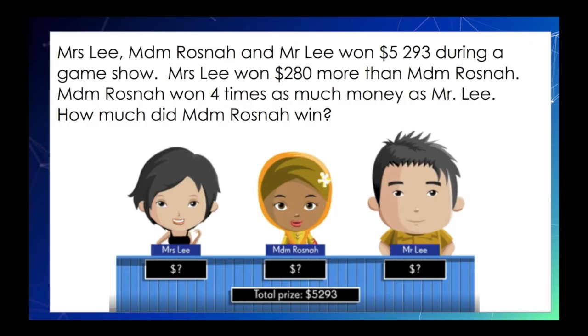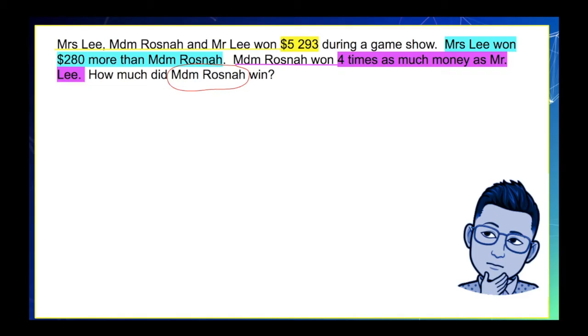In this type of problem, we can easily say that this can be solved by using a comparison model since the winning of one person is being compared with another. So, let's try to find out how to construct this comparison model. To maintain focus on obtaining the correct solution, you may make brief notes in the problem, highlight important information, or even circle the question you need to answer to solve the problem. So, let's start now.